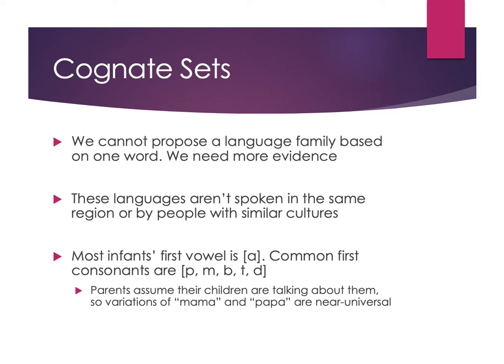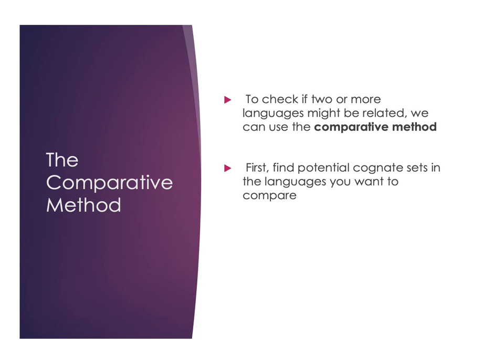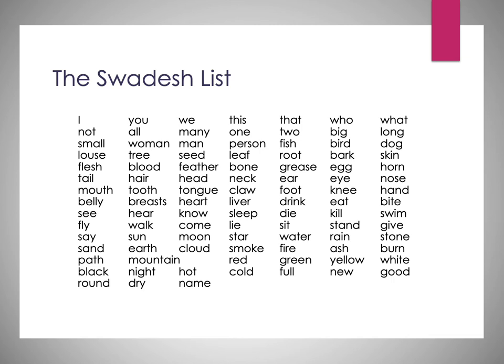The way we apply cognates to look at things historically is through what's known as the comparative method. You check whether languages are related by finding potential cognate sets, then comparing words with the same meaning for phonetic similarities. This most commonly uses very common words that would be native to languages regardless of where they're spoken — things central to humanity. Linguist Swadesh came up with a list of 100 words and a list of 200 words that we often start with when comparing languages.